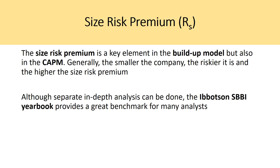The more advanced formula adds three premiums: the size risk premium, the country risk premium, and the company specific risk premium. The size risk premium is a key element in the buildup model and the CAPM. Generally, the smaller the company, the riskier it is and the higher the size risk premium. For example, a company with one store is much more exposed to economic cyclicality than one with 30 stores, which has diversified revenues and locations.